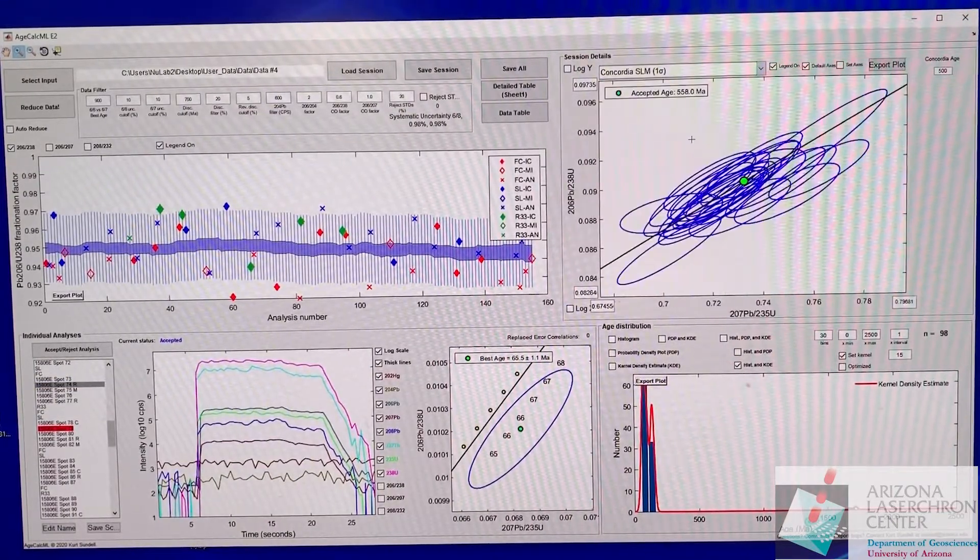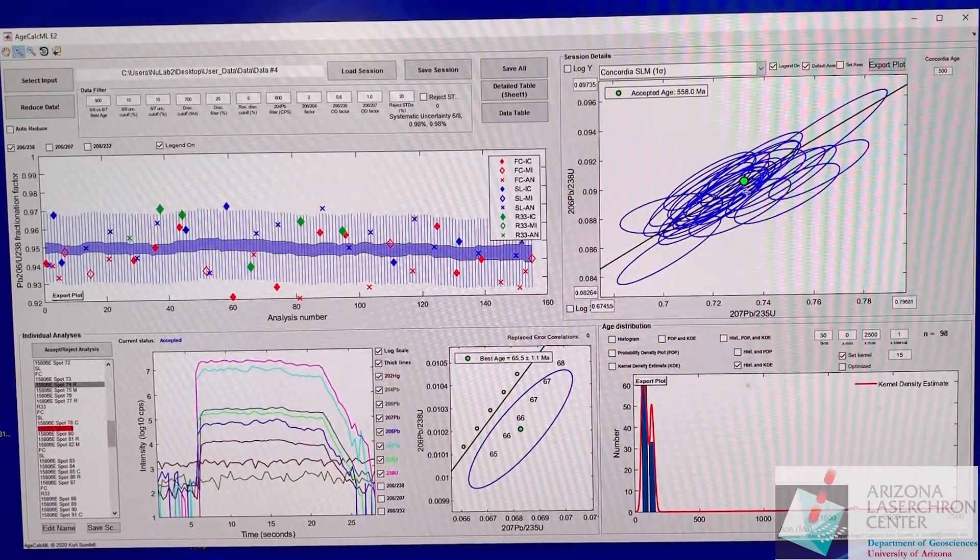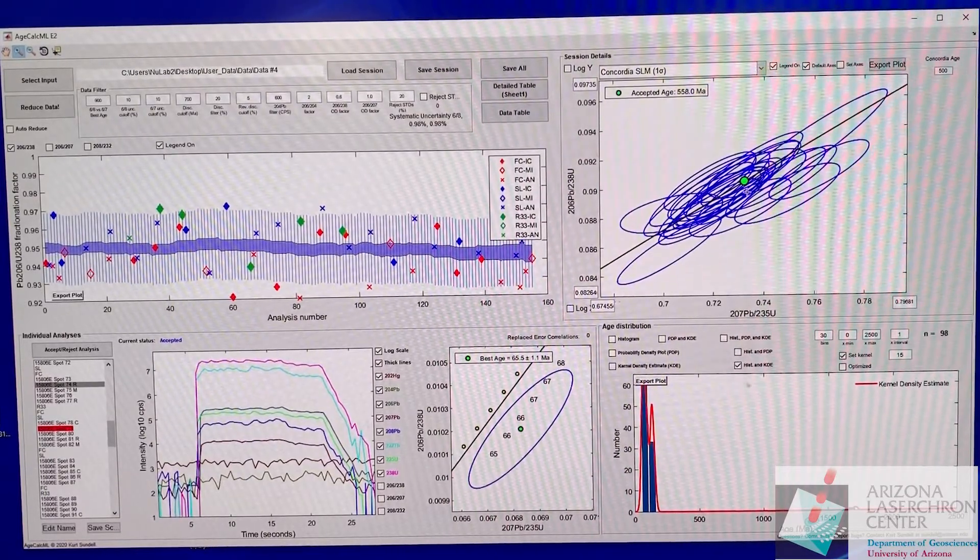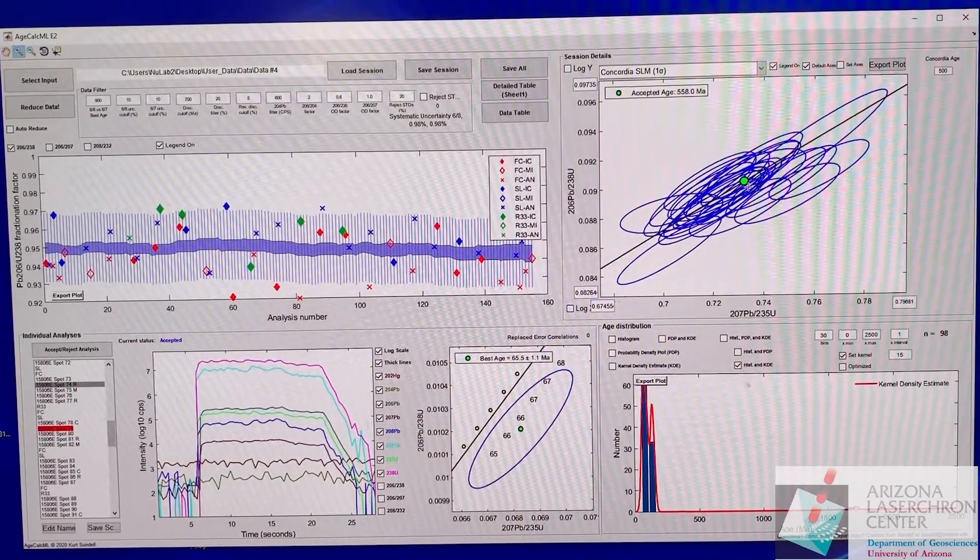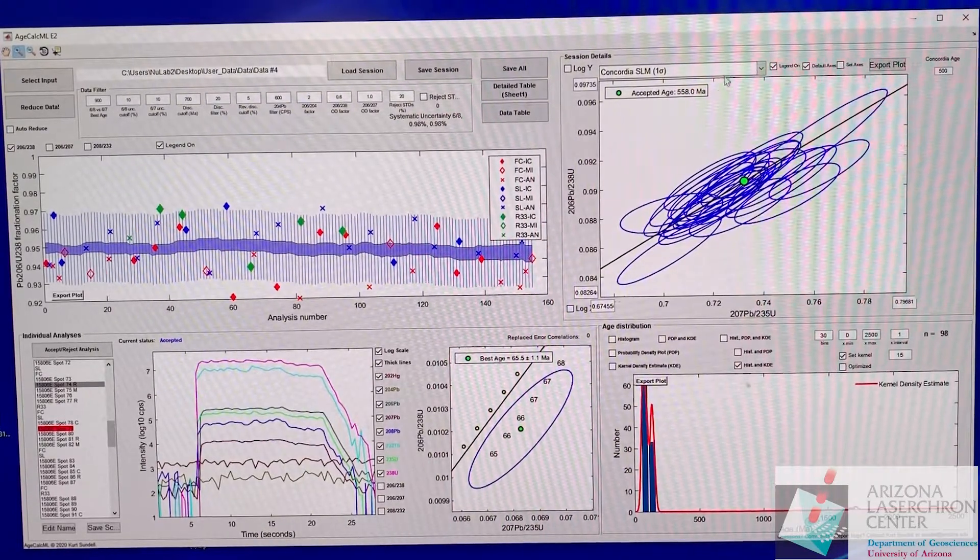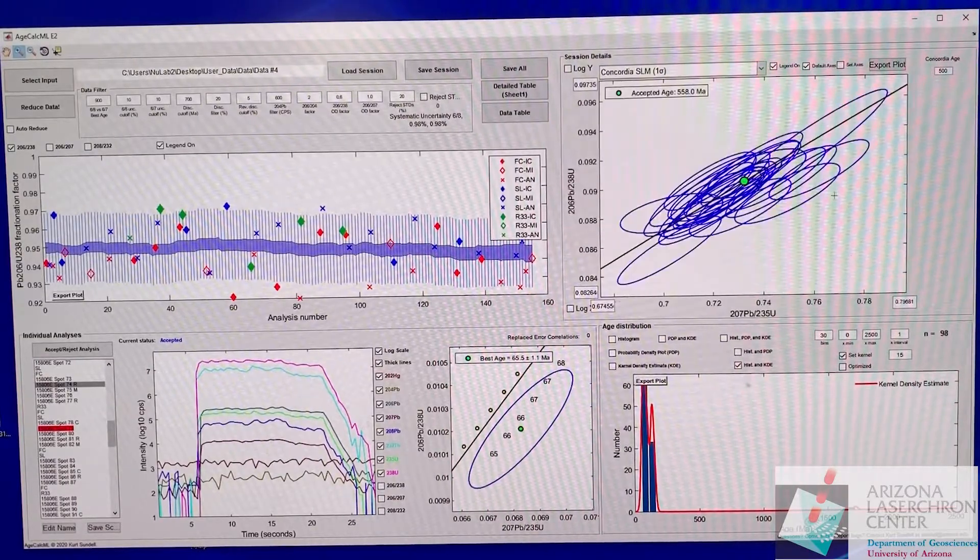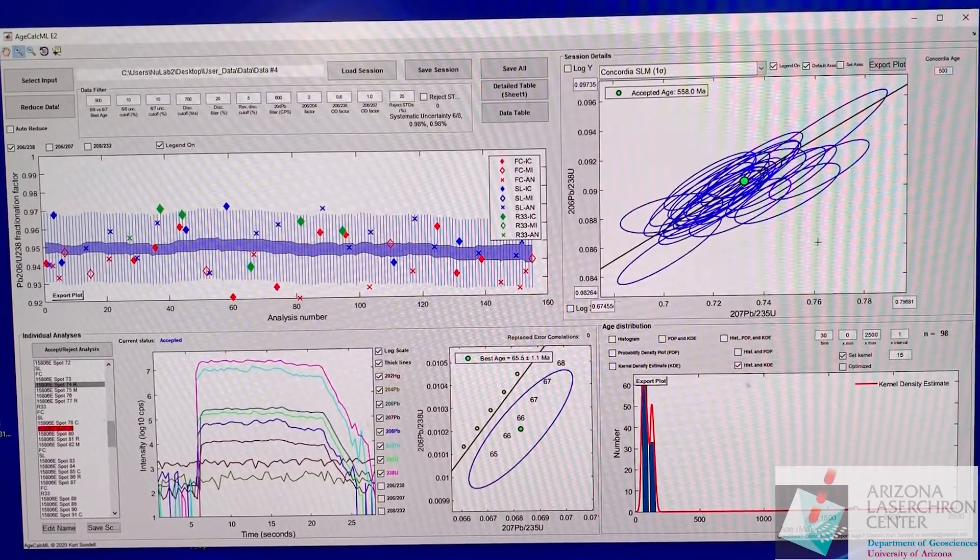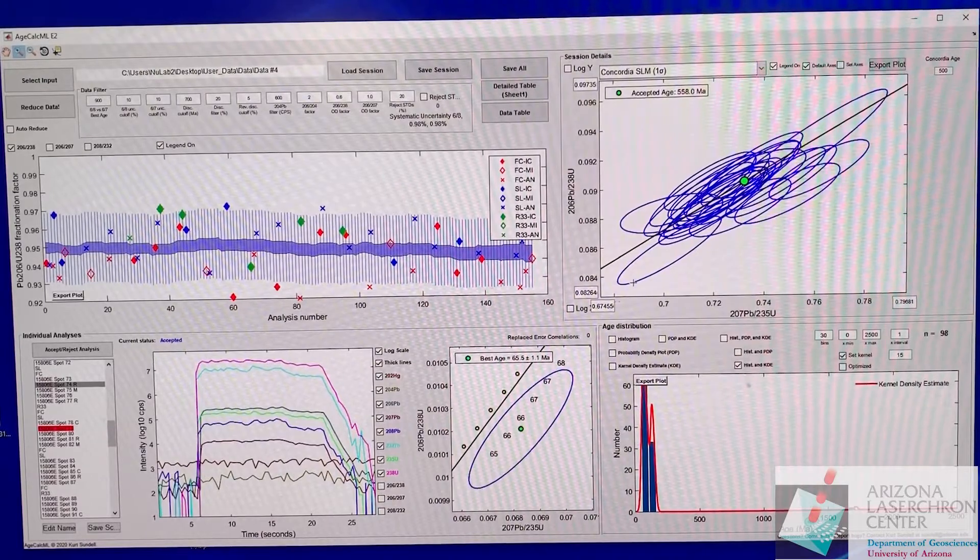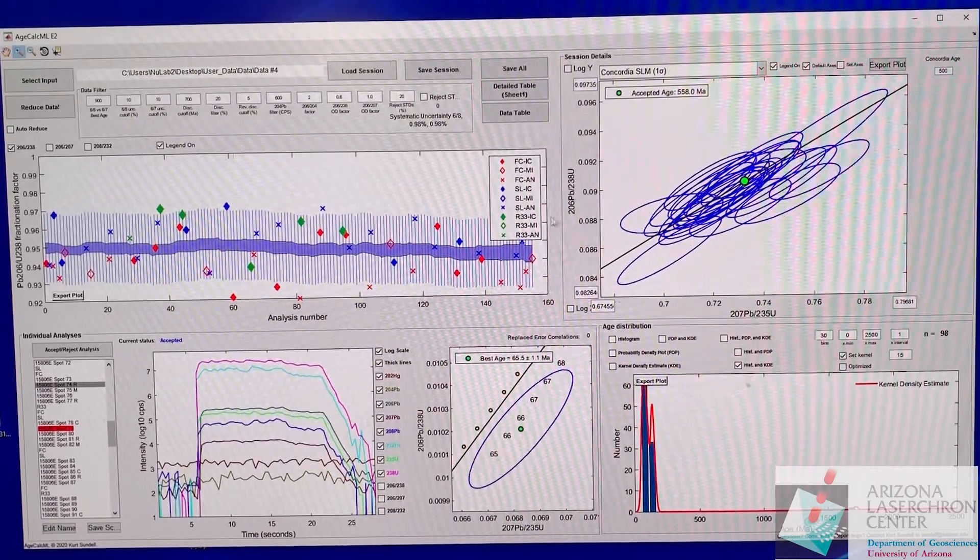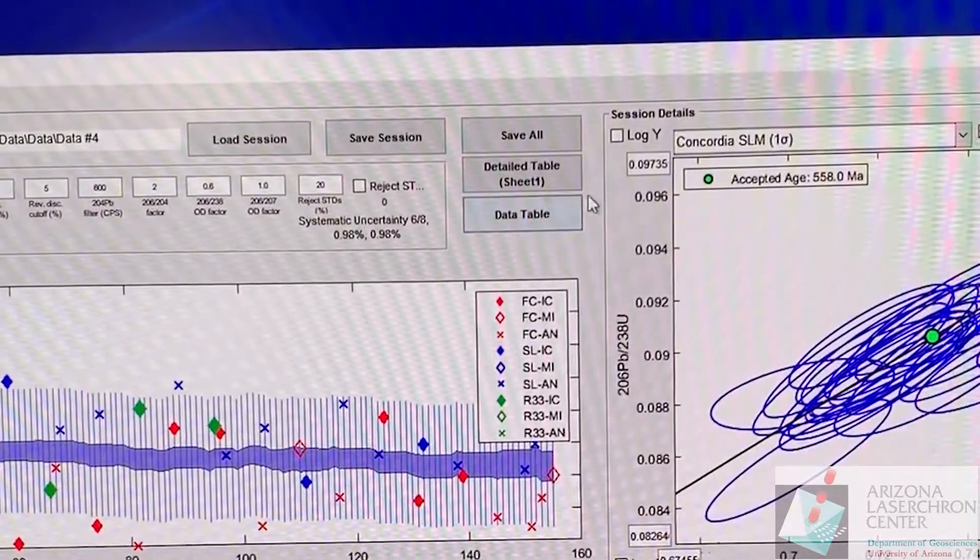What I like to do is just leave it on something that looks nice at the very end. So now you see the SL is right on Concordia, that's because of the ACF correction that we did. You can look at the R33. This one's looking better as well. What I like to do is just go to something that looks nice so that when I pull this back up I know that's where I left off, because we're going to now save this session.